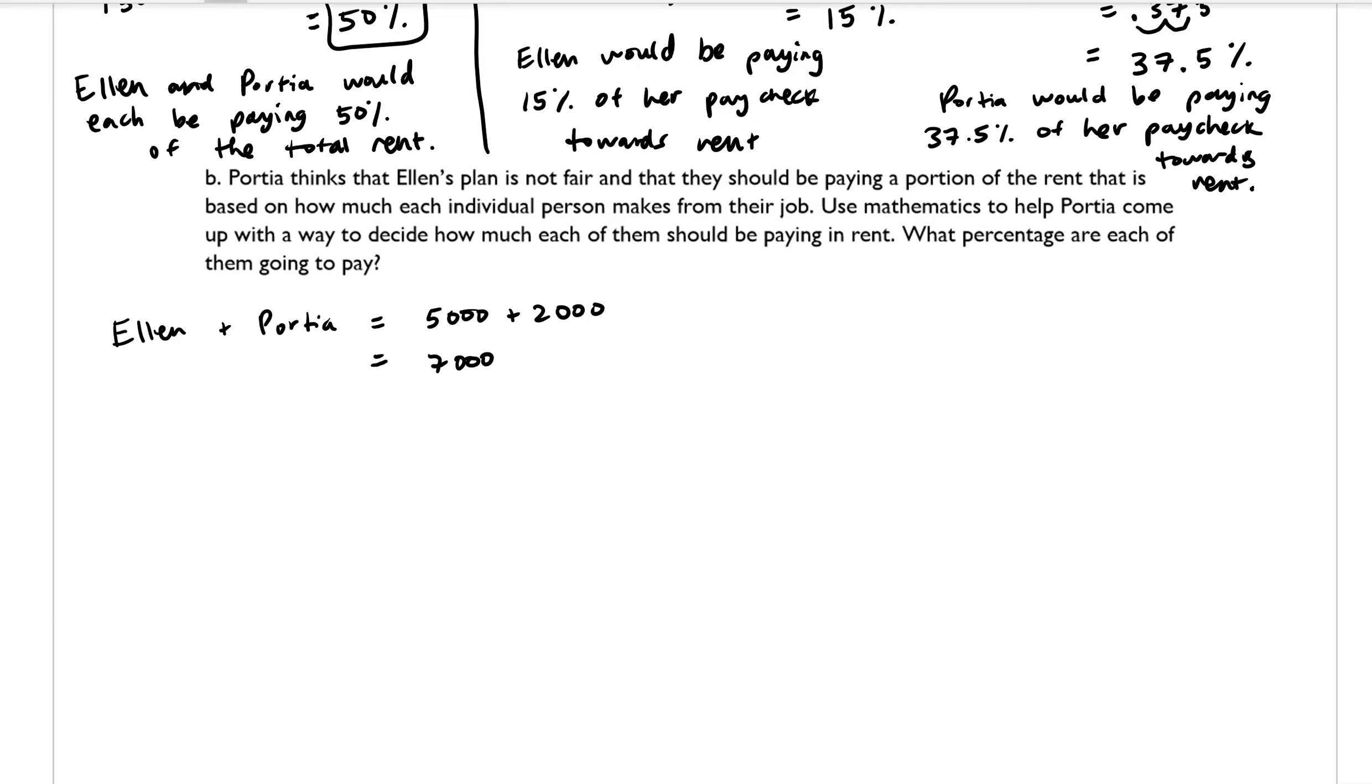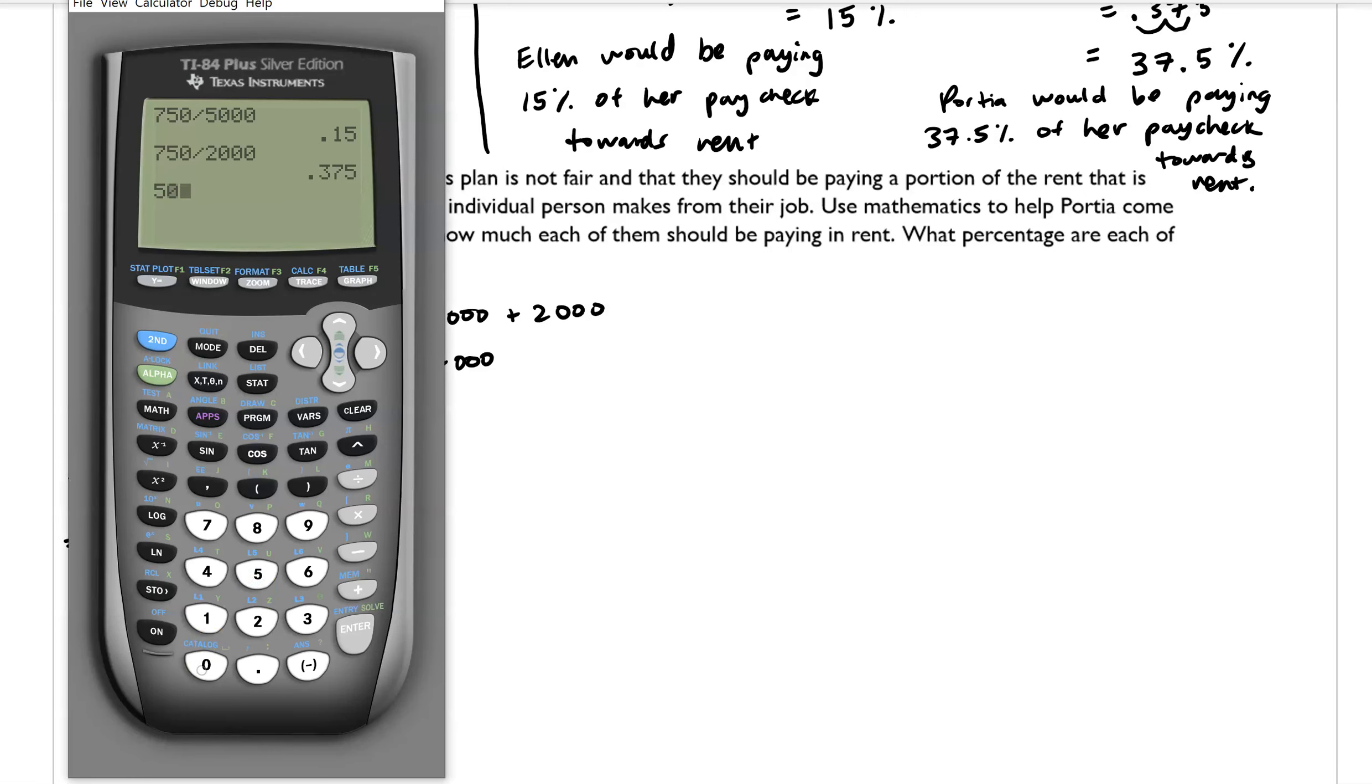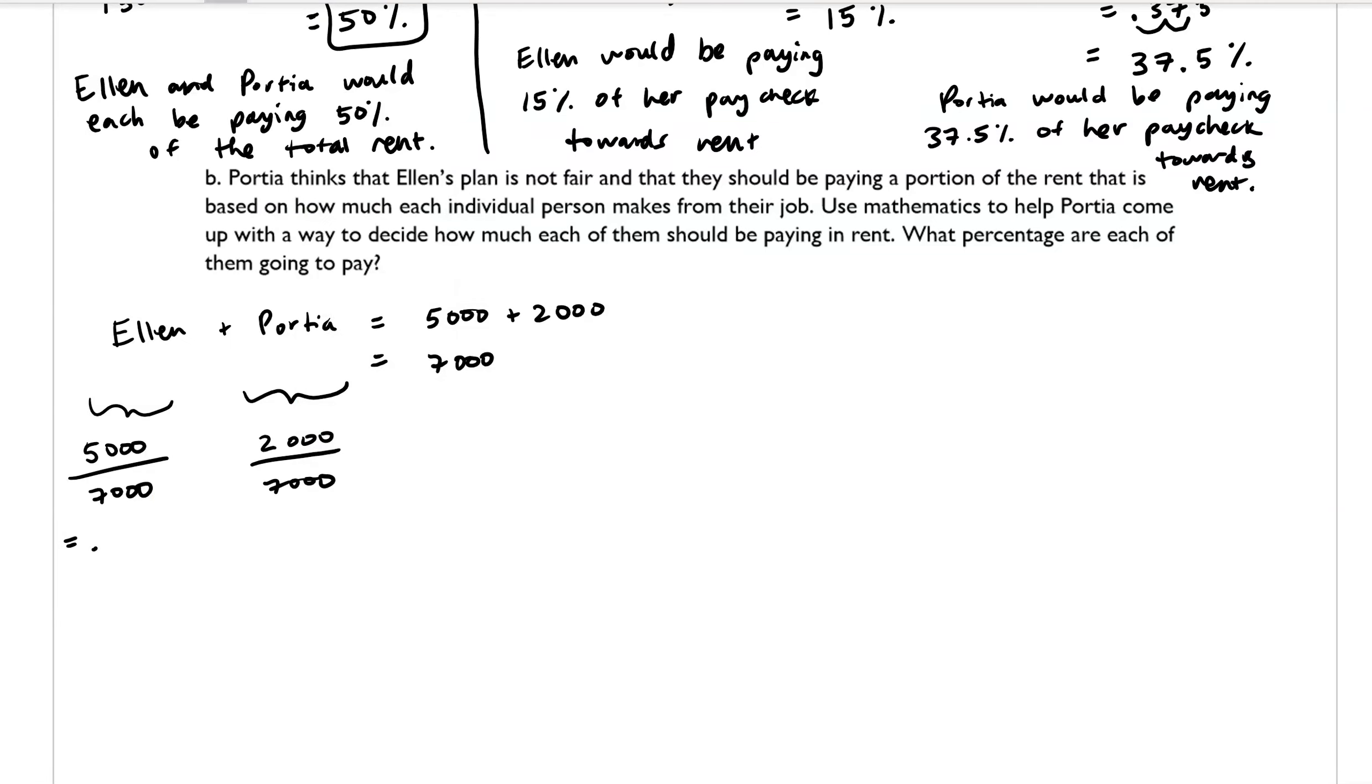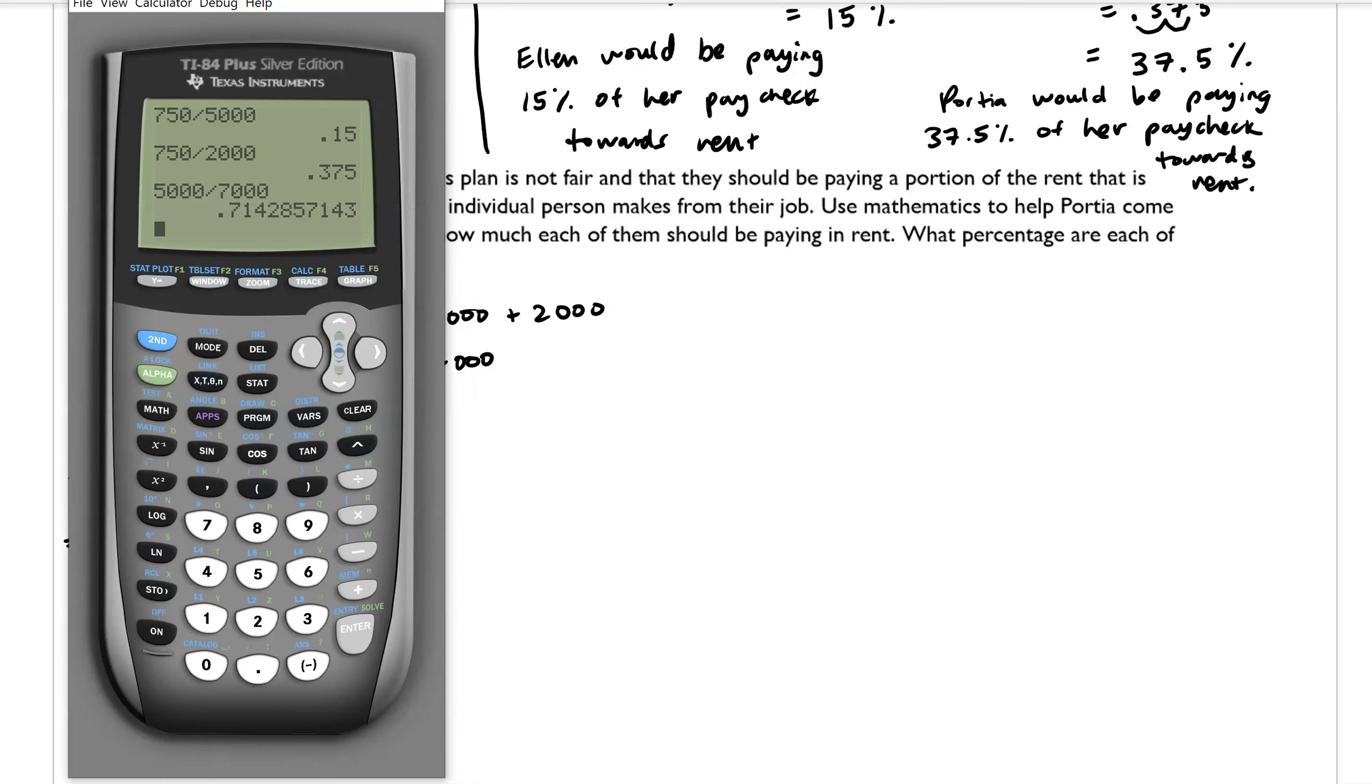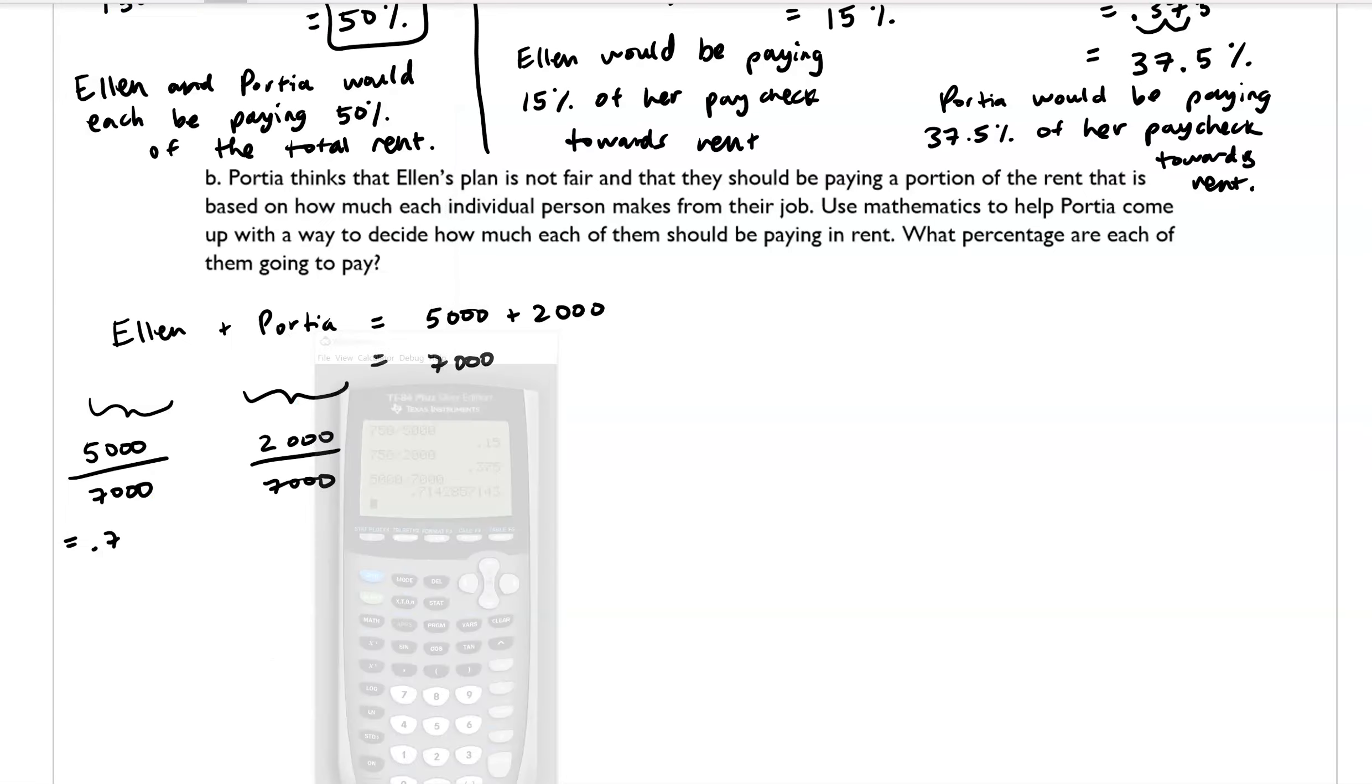So we want to think about each of their individual portions, so Ellen's would be $5,000 over a combined $7,000 and then Portia's, her portion is $2,000 over $7,000. And we can convert both of those numbers into percentages.